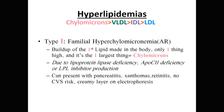Now on to hyperlipidemias. There are five types we're going to go through. Type one is familial hyperchylomicronemia, an autosomal recessive disorder. Pretty much what happens is you have a buildup in one lipid in the body — just one thing is high.